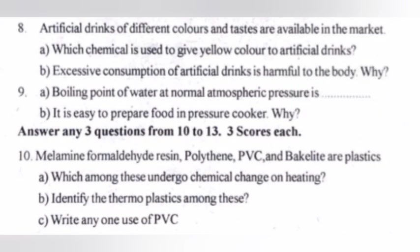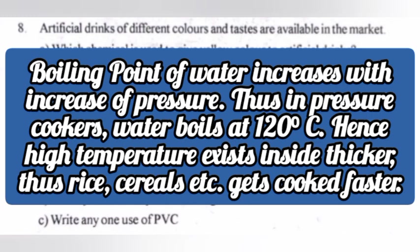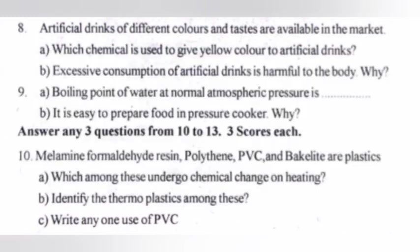It is easy to prepare food in a pressure cooker. Why? Answer: Boiling point of water increases with increase of pressure. Thus, in pressure cookers, water boils at 120 degree Celsius. Hence, high temperature is achieved inside the cooker, and rice, cereals, etc. get cooked faster.